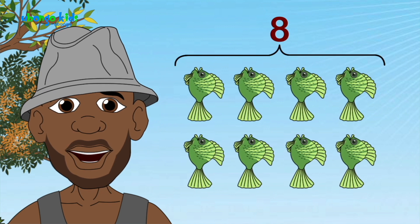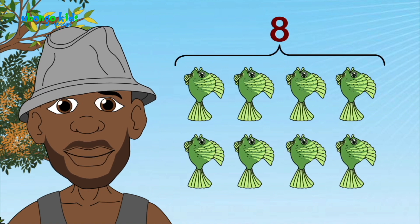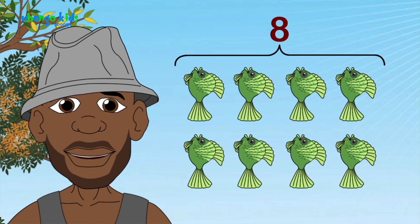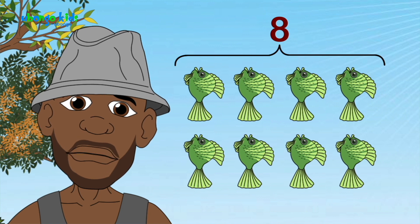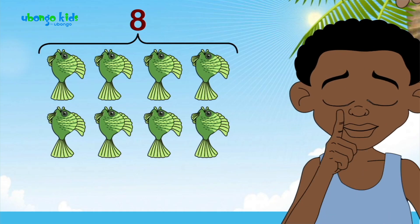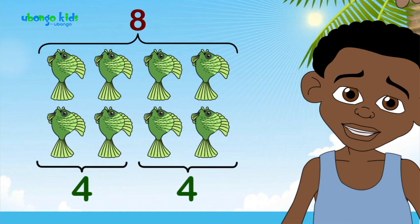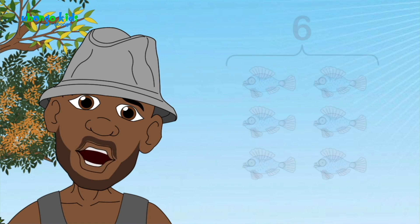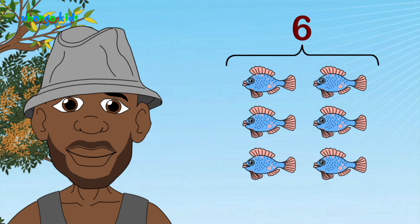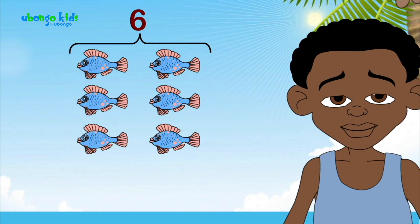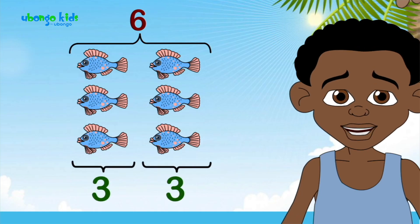Now, as an example, if we had eight fish, how many would each of us get? Four and four, right? That's right, Coba. You understand the meaning of half. So tell me, what is half of six? Half of six is three.